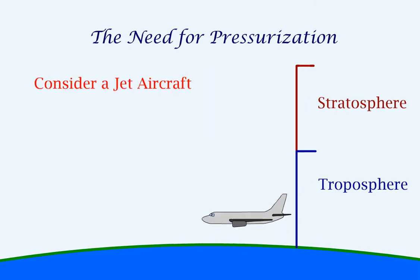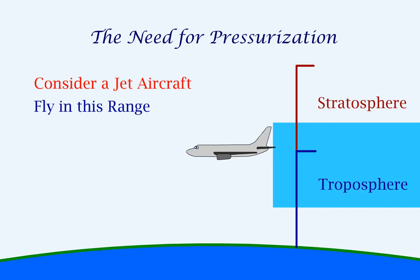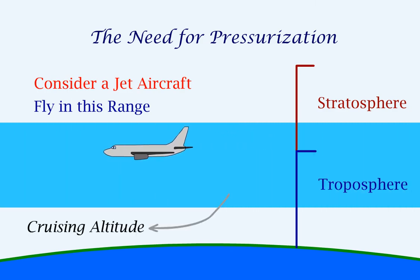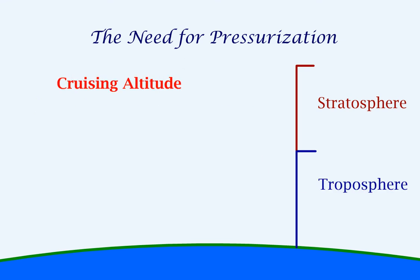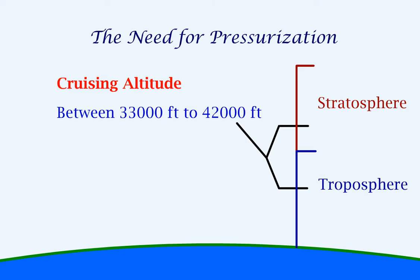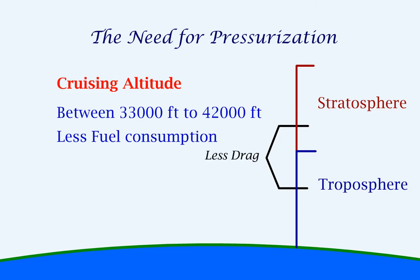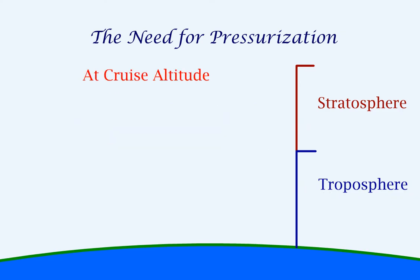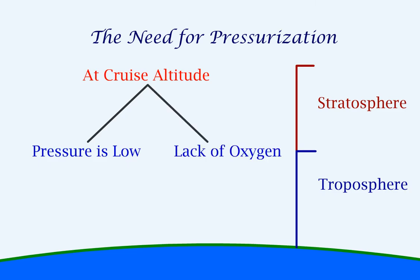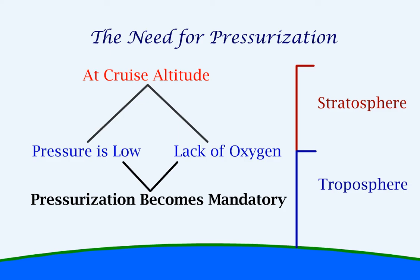If we consider a jet aircraft, they usually fly in a range called the aircraft's cruising altitude. This cruising altitude will be between 33,000 feet and 42,000 feet. This is chosen so that there is less fuel consumption, as there is less drag, and most of the weather changes and turbulence can be avoided. At the cruising altitude, the ambient pressure is too low and there is a lack of oxygen, so pressurization of the aircraft becomes mandatory.